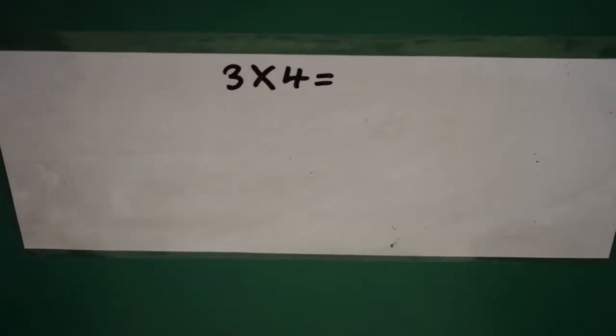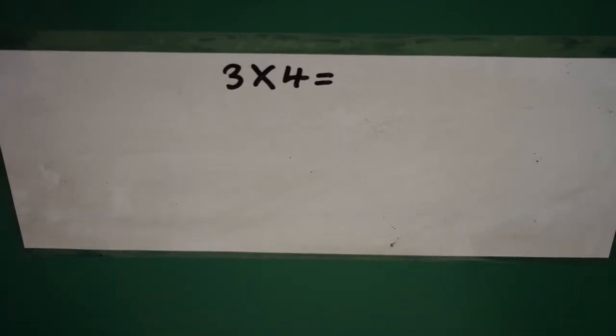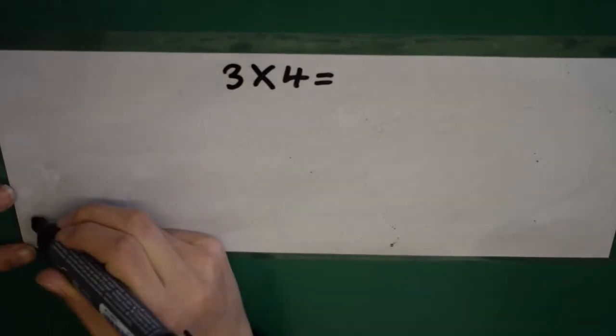Can you read this out for me? Three times four. So, we can start off by drawing a number line.